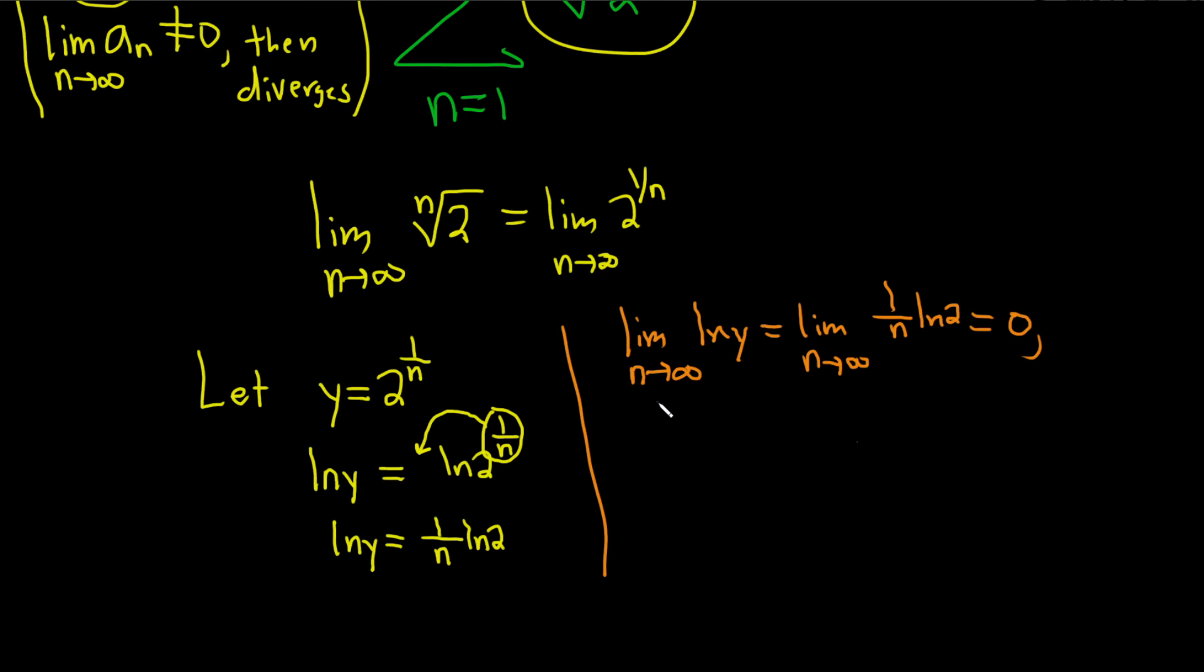So what have we shown? We've shown that the natural log of y approaches 0 as n approaches infinity. So if you exponentiate this, you have e to the natural log of y approaches e to the 0 as n approaches infinity. By the way, the reason you can do this, the reason you can just exponentiate like this through the limit is because e to the x is a continuous function.